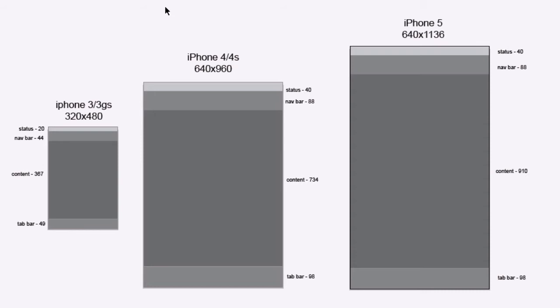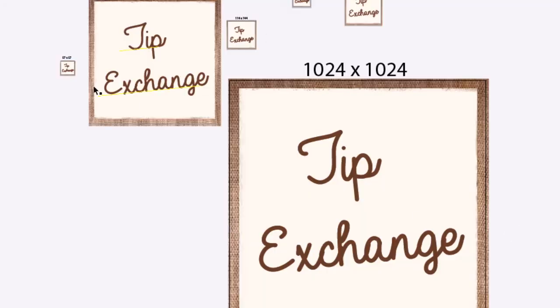The app that we're going to build is called the Tip Exchange. It's something where we can build the app and push and pull data from the server. We can do quite a few things with it — we're going to upload images to the server, crop them, and all sorts of stuff, so it covers everything.